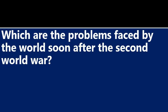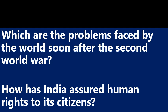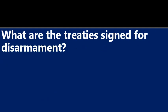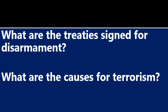Which are the problems faced by the world soon after the Second World War? How has India issued human rights to its citizens? What are the treaties signed for disarmament? Salt — SALT, NTBT — Nuclear Test Ban Treaty, MAD — Mutual Assured Destruction.